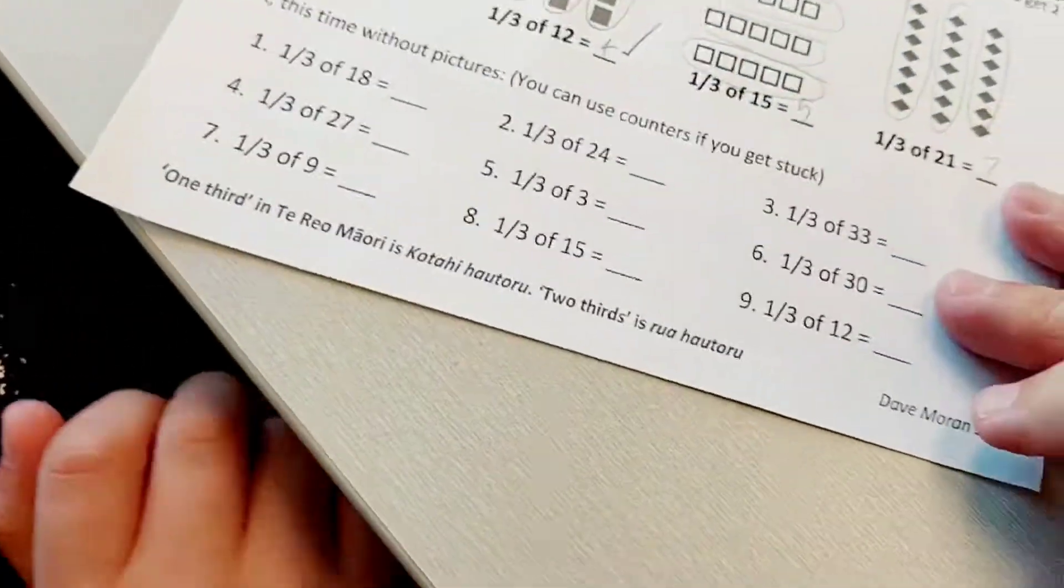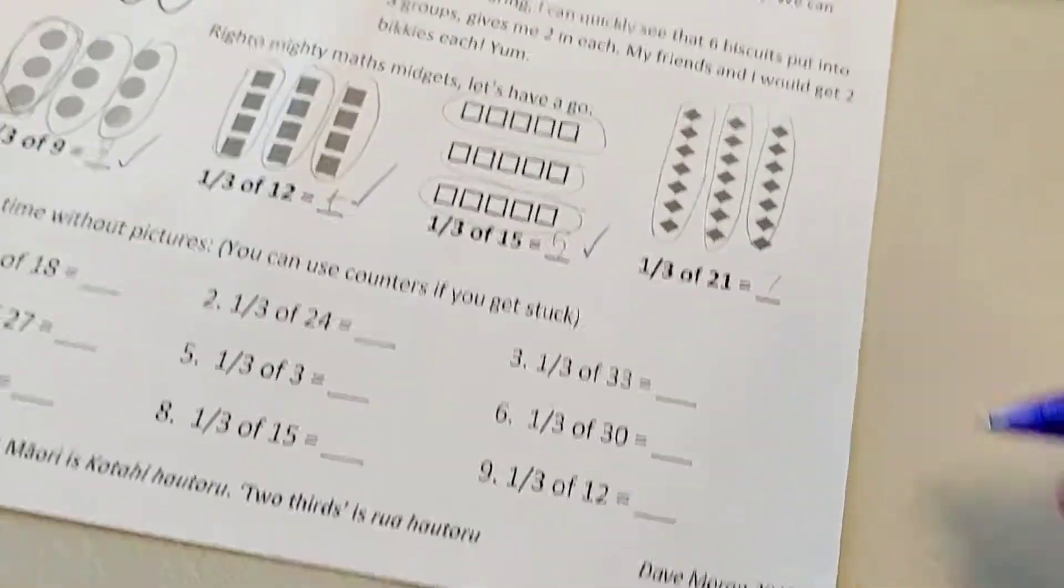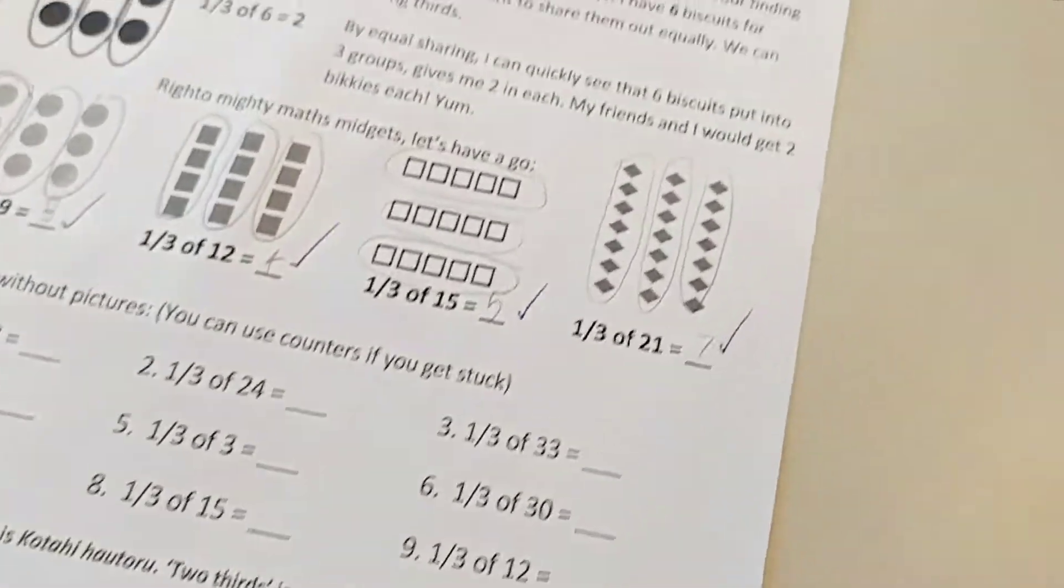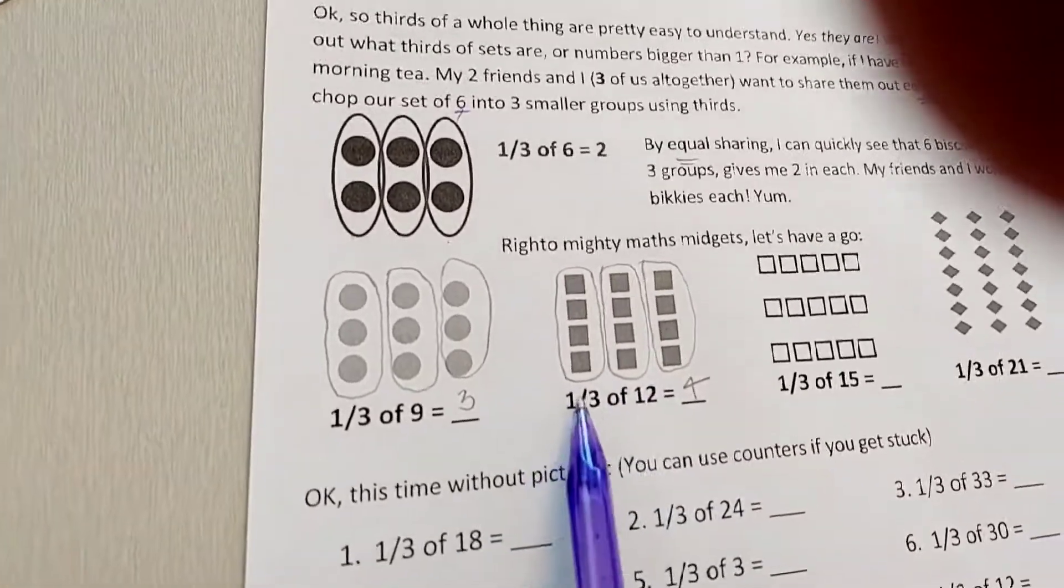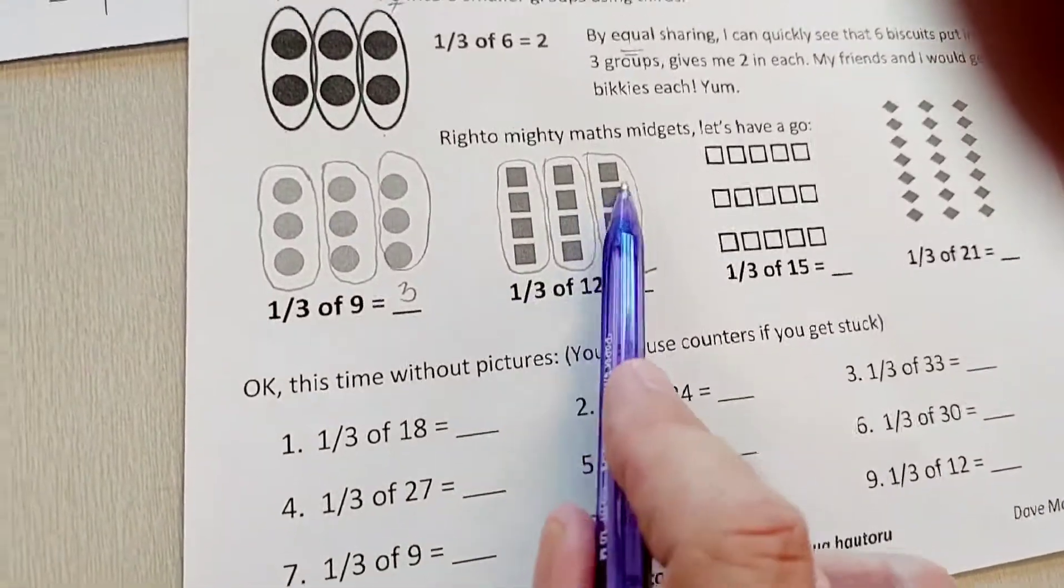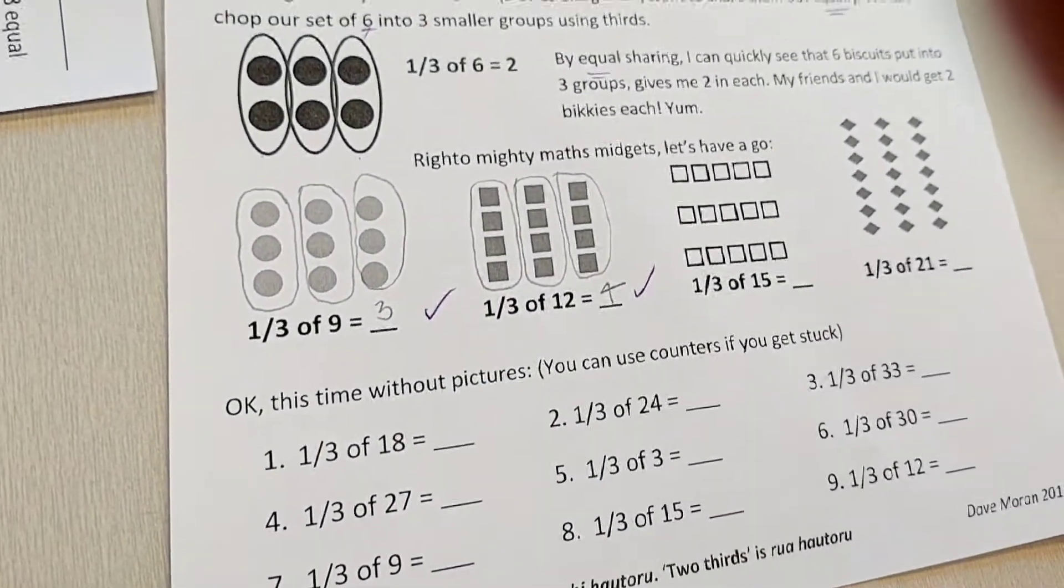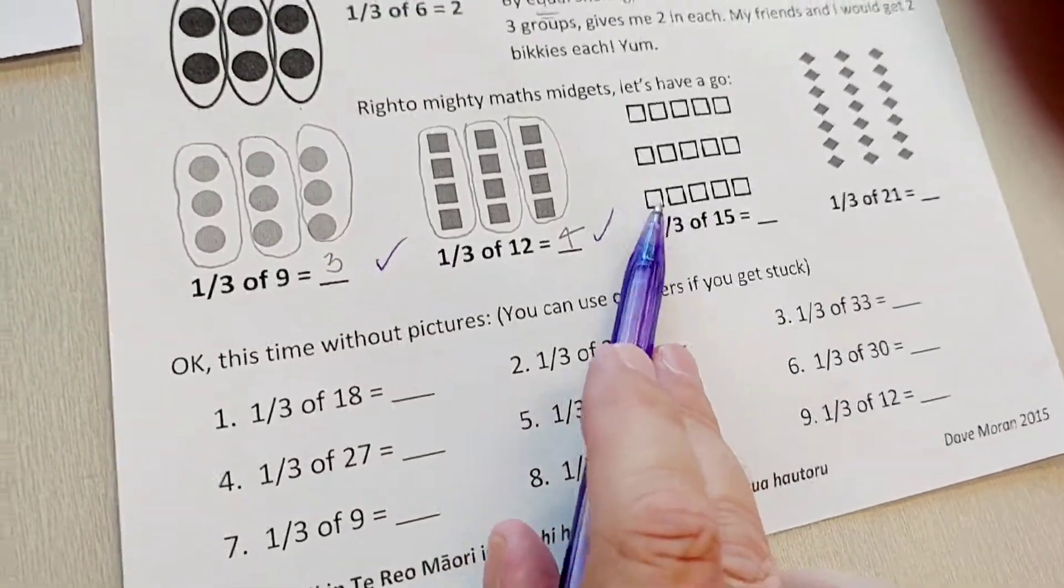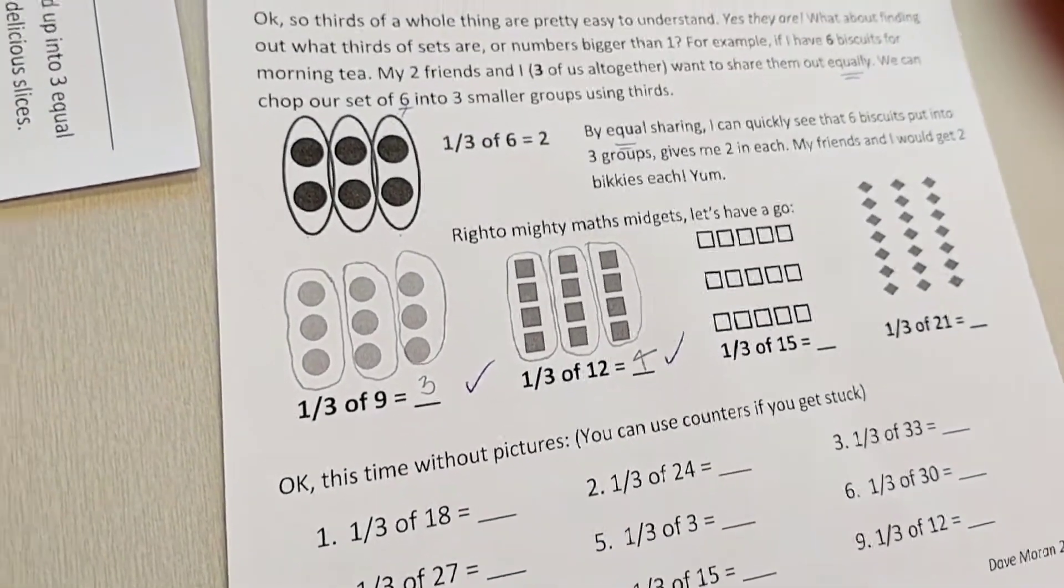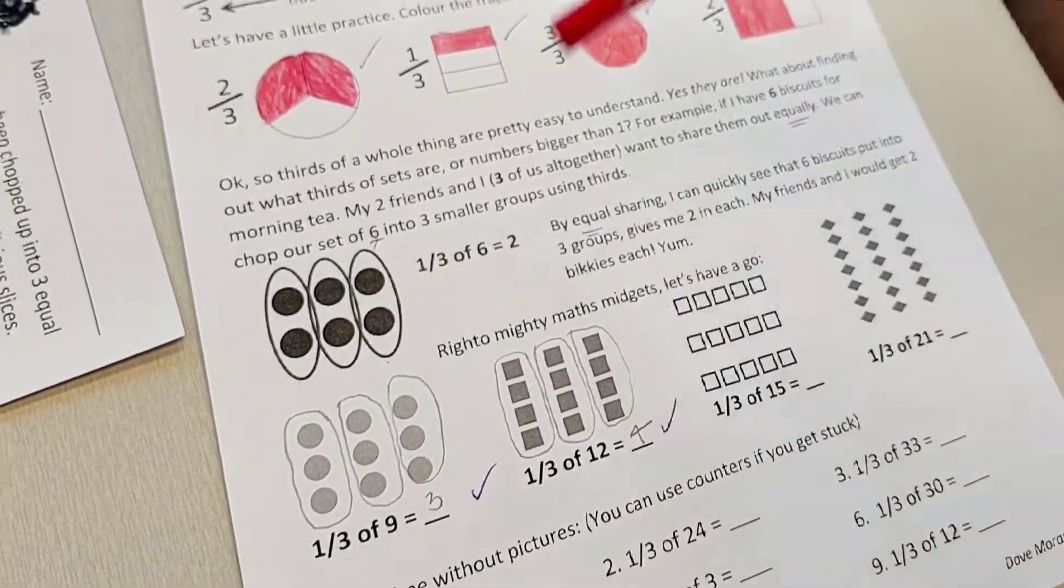You know how before it said midgets? Well, midgets is a type of sport card. Okay, so now you've heard your go. You've got one third of twelve and you've figured out that there's four in each of those boxes. Do you reckon you could have a go at this next one by yourself? Mm-hmm. Have a go.